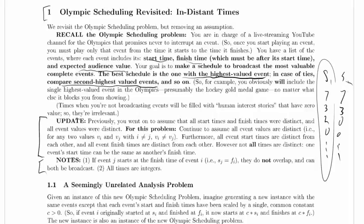Now here's the update. Previously we went on to assume that all start times and finish times were distinct, and all event values were distinct. For this problem we're going to continue to assume that all event values are distinct, so for any two values vi and vj, with i not equal to j, vi is not equal to vj, so this would be event i and event j, and because they're not the same event, they do not have the same value.